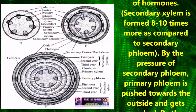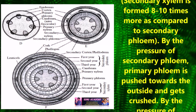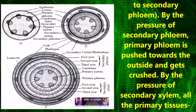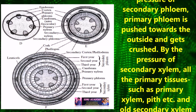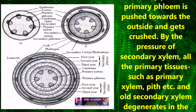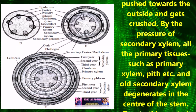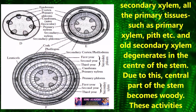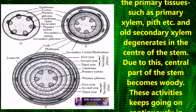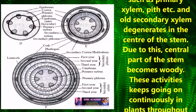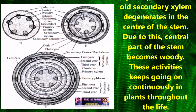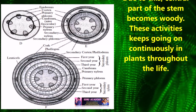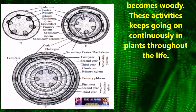By the pressure of secondary xylem, all the primary tissues such as primary xylem, pith, etc., and old secondary xylem degenerate in the center of the stem. Due to this, the central part of the stem becomes woody. These activities continue throughout the life of the plant.